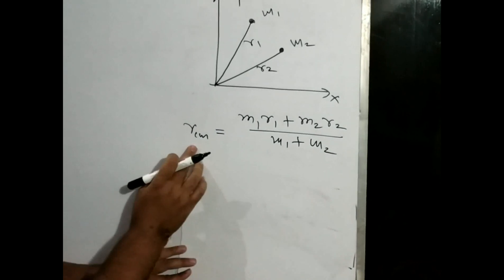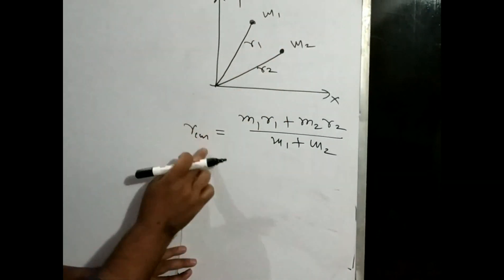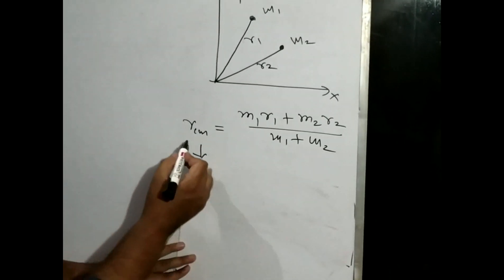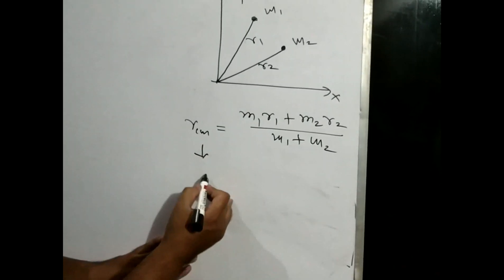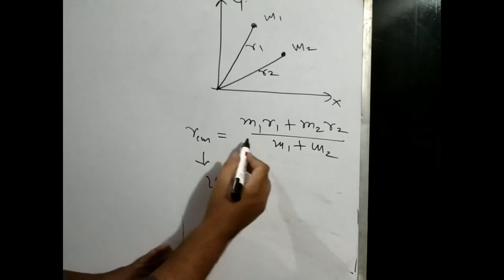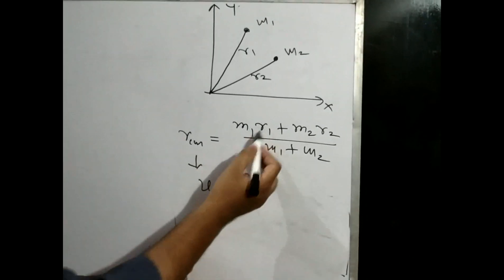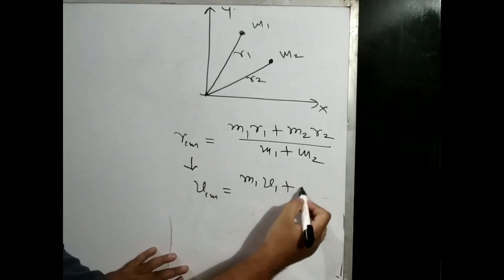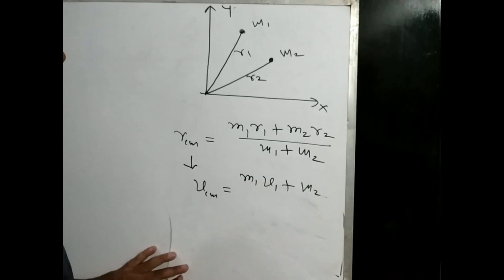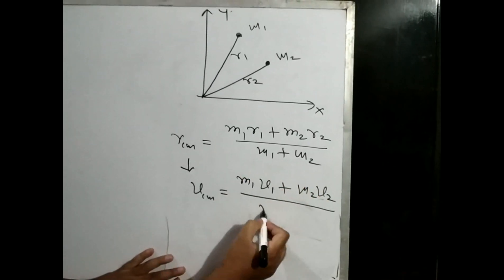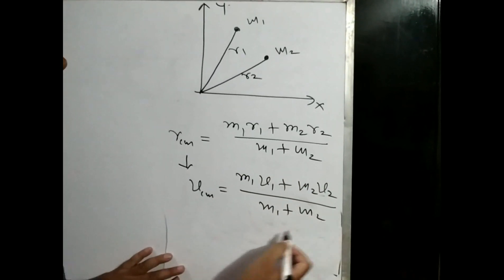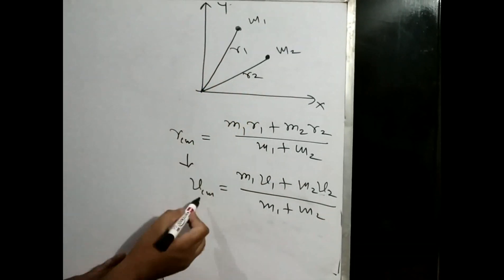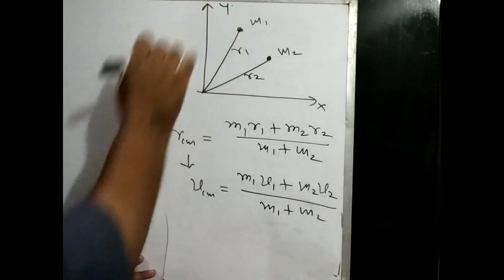Ab rcm kya hai - this is the position vector of center of mass, jis ke center of mass ki origin se distance yeh hogi. Ab yahan par isko ek baar differentiate karte hain. R ko t ke respect mein differentiate karein, to dr by dt ho jayega. Or dr by dt kya hota hai? Ye velocity hoti hai - that is velocity of center of mass. To yahan par m1 to constant hai, as it is likhenge. Or r1 ka differentiation hoga dr1 by dt, aur dr1 by dt ko hum v1 likhenge. Similarly, r2 ka differentiation dr2 by dt, aur isko hum v2 likhenge. Upon mein mass to constant hai, so we will write as it is. To yeh velocity of center of mass ka formula hoga. v1 and v2 are the velocities of these two particles, and vcm is the velocity of center of mass.